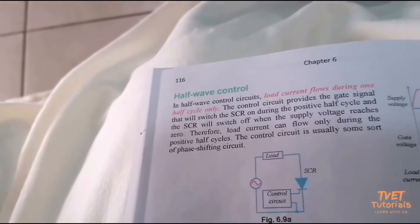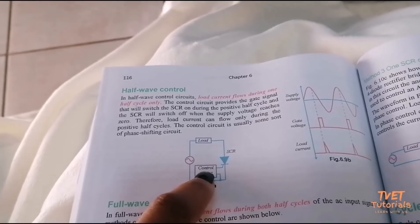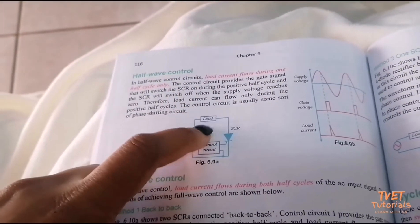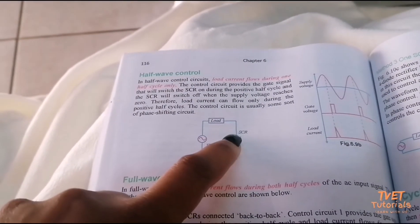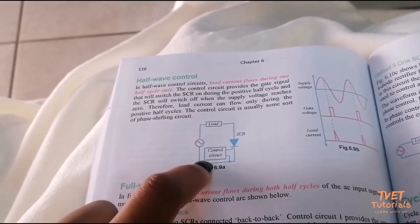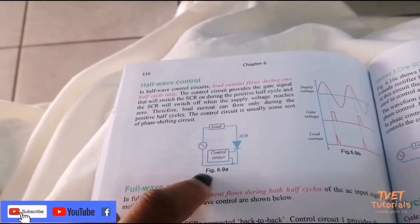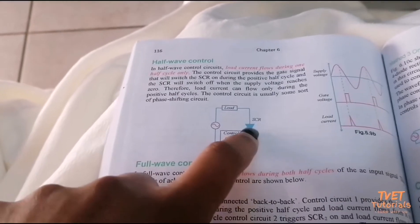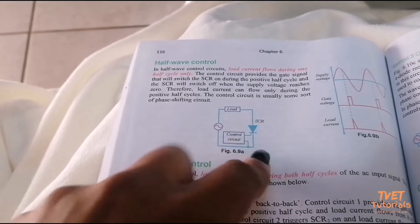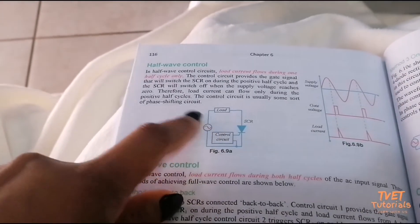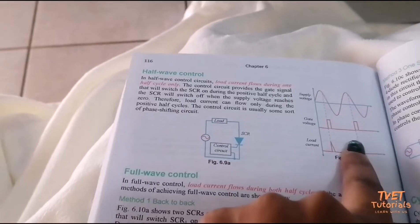For half wave phase control, they use a timer to control the circuit. During the positive half cycle, the timer — the control circuit — will be on, and when it is on, the SCR will also be on. During the negative half cycle, the polarity changes, the control circuit will not be on, and we'll have a space. During the positive half cycle when the control circuit is on, the SCR will be on and we'll have a waveform.